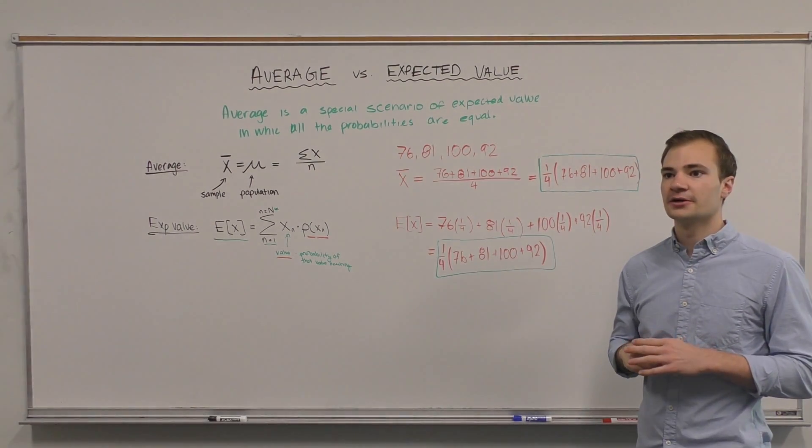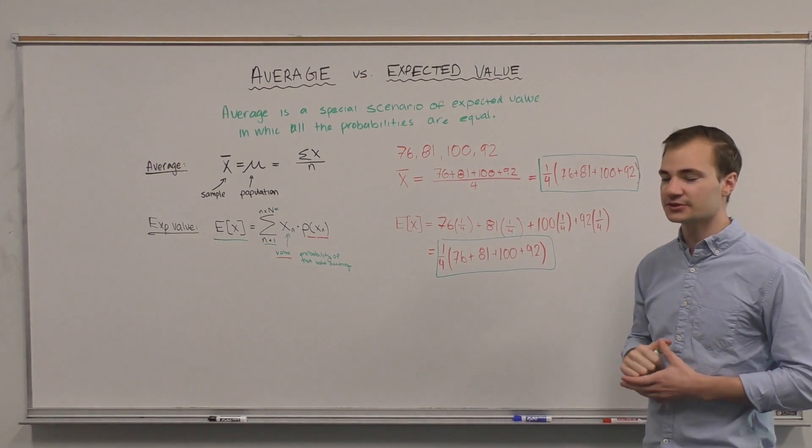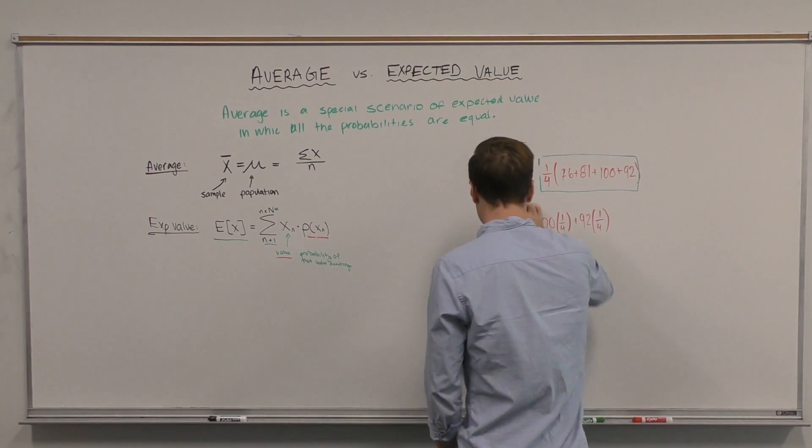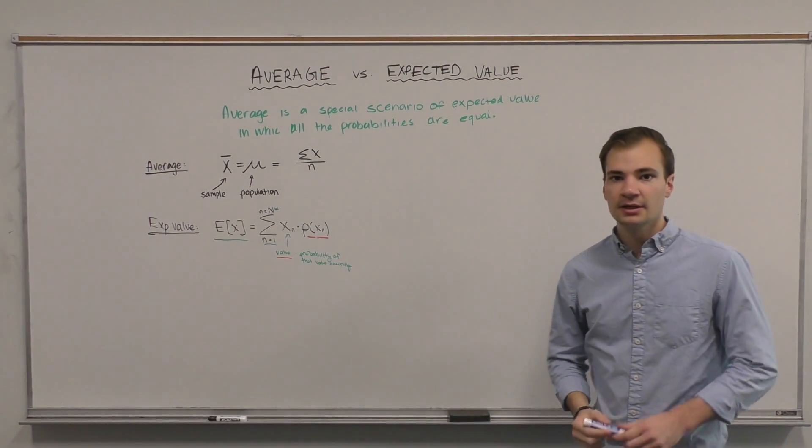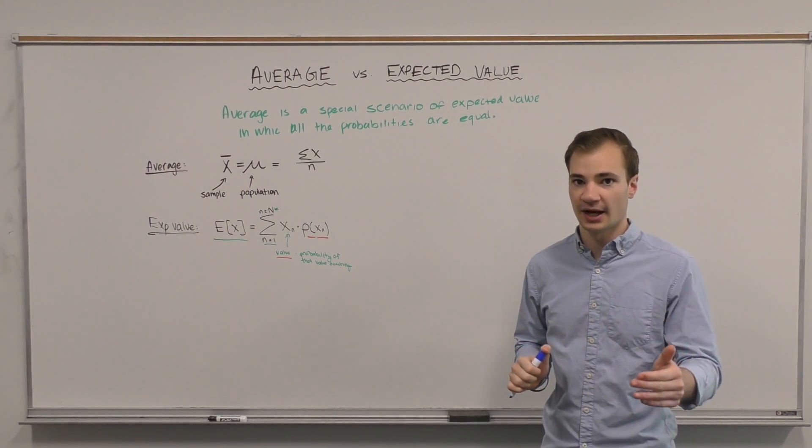Let's look at an example now where the expected value is not equal to the average. It's a little bit more interesting. If you've seen some of my other videos before, you know I like to look at the example of rolling one die.